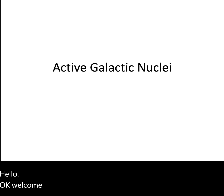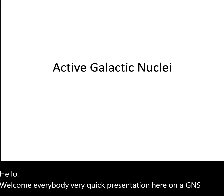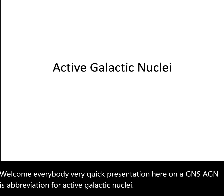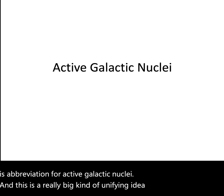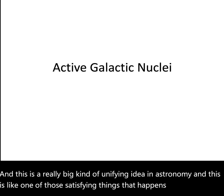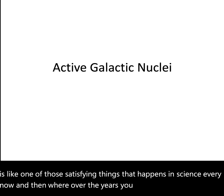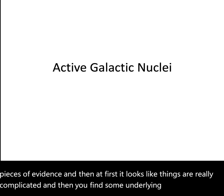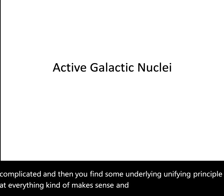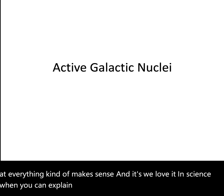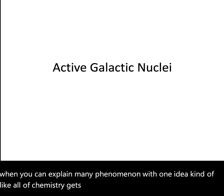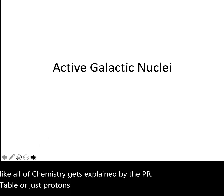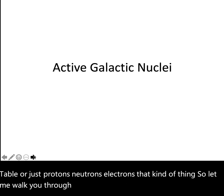Welcome everybody. This is a quick presentation on AGNs — active galactic nuclei. This is a really big unifying idea in astronomy. It's one of those satisfying things that happens in science where over the years you get a lot of different pieces of evidence, things look complicated, and then you find an underlying unifying principle. We love it in science when you can explain many phenomena with one idea, like all of chemistry being explained by the periodic table or just protons, neutrons, and electrons. So let me walk you through the confusing landscape and then the unifying principle.